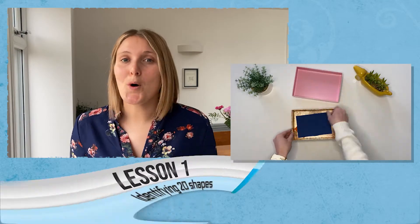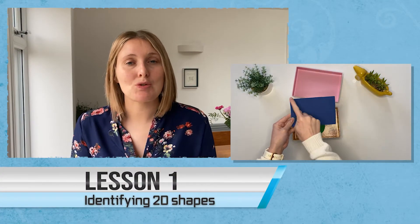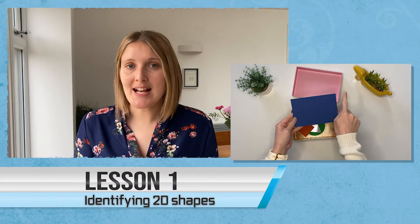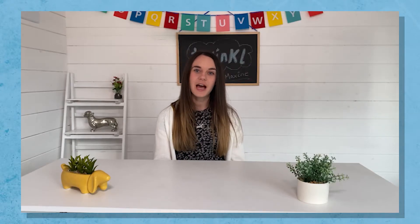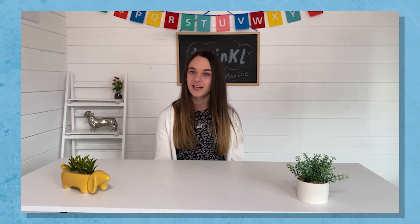In lesson one, Maxine introduces the children to a rectangle, square, circle, and triangle, using mathematical vocabulary to describe them. Perfect for Key Stage One children, they are challenged to create their own picture using 2D shapes. Here are some more shapes — pause the video now and see if you can draw these shapes to make a picture.